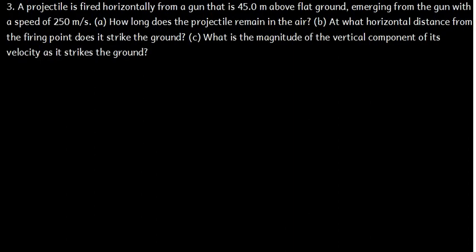The question is saying, a projectile is fired horizontally from a gun that is 45 meters above flat ground, emerging from the gun with a speed of 250 meters per second.